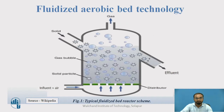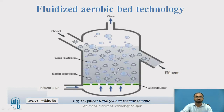Looking at the diagram, you will understand that water including air is made to push inside the reactor. It is typically cylindrical in shape in which the depth is kept much larger than the surface area. As the water is made to push at a velocity which can overcome the gravitational pull, the media will be kept continuously in suspension. As the water passes, whatever organic matter is present in the wastewater will get attached to the media and automatically the biodegradation process takes place.